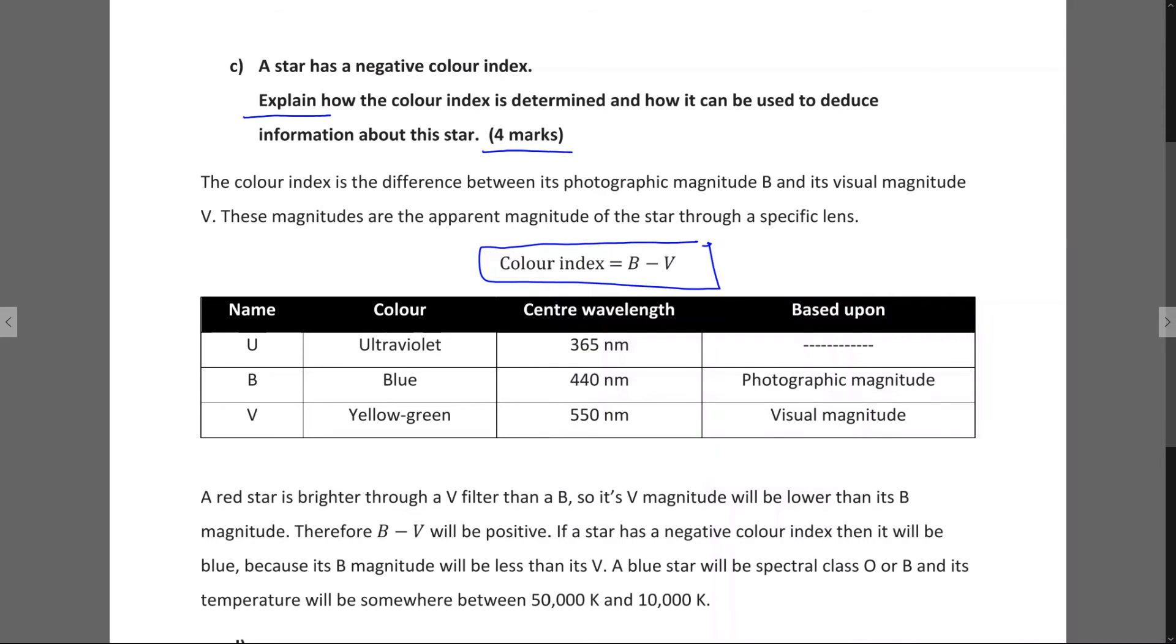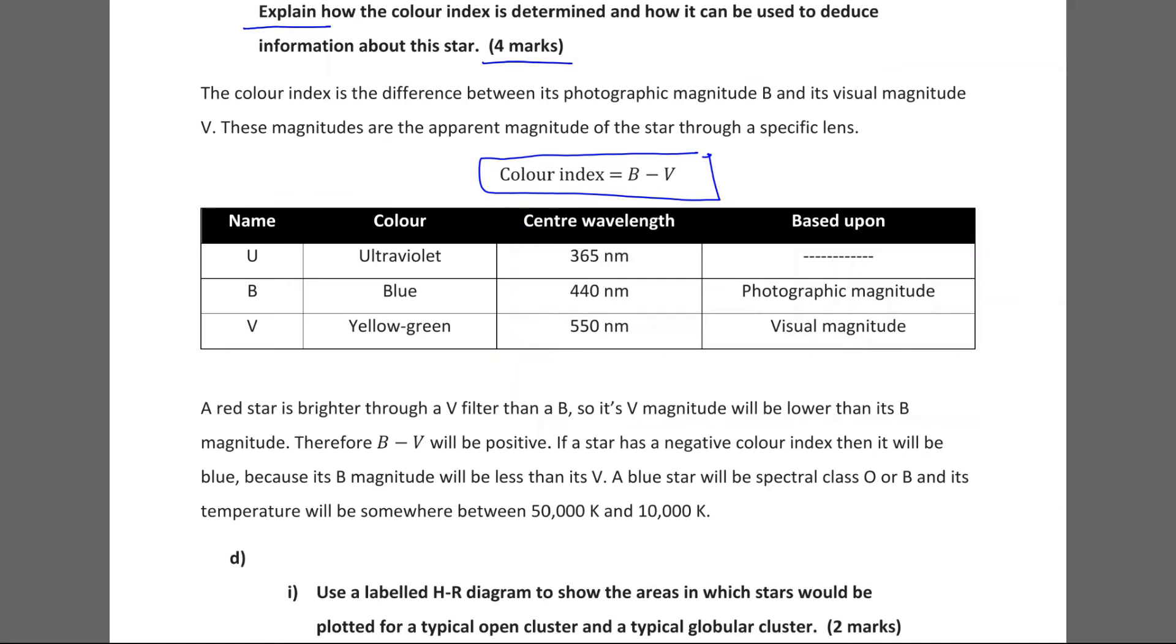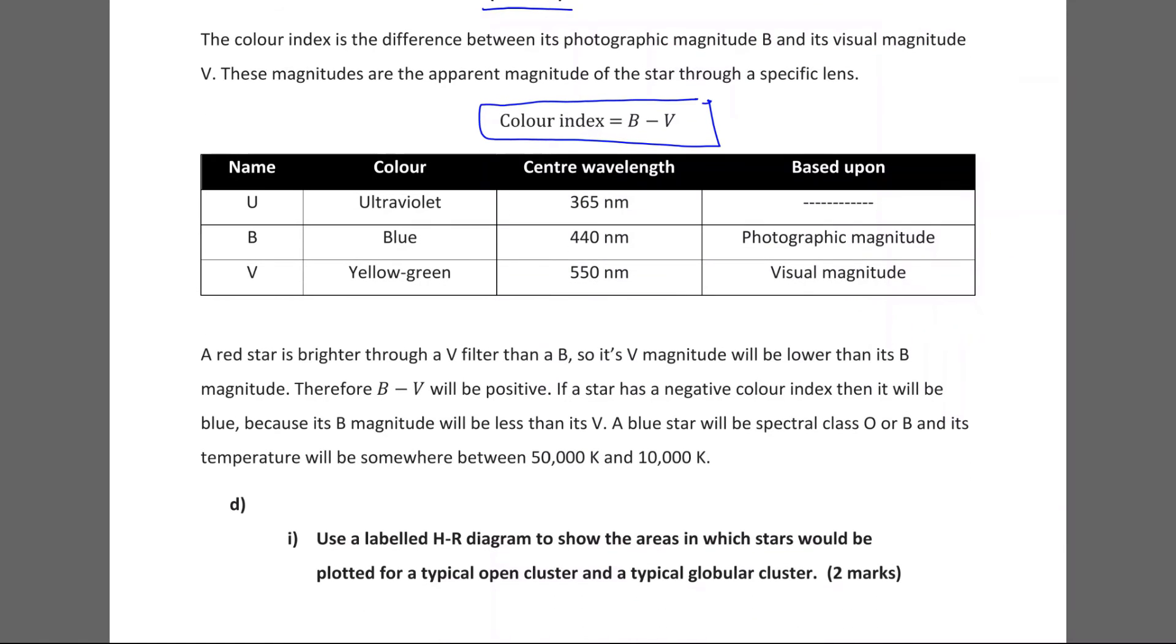Do you have to write this table that's here now? I don't think so. I just included that as a bit of extra information for you guys. So we have three different lenses. We have a U-lens, a B-lens, and a V-lens. And what that does is it filters out certain types of light. So the U-lens lets ultraviolet light through. The B-lens lets blue light through. And the visual lens lets yellow-green light through. Its center wavelengths, well, it's the center wavelength, so the main wavelength that gets through. And it's based upon, so the B and V lenses are based upon photographic magnitude and visual magnitude. And this is based on some historic, or based on the old ways, basically, of looking at stars.